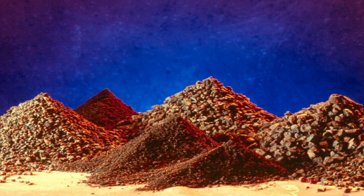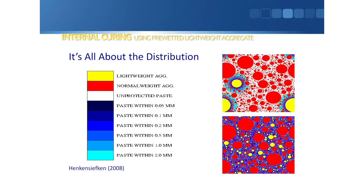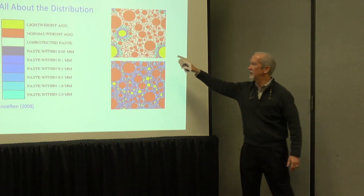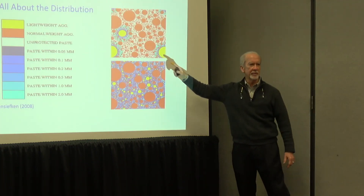The fine aggregate typically is used in internal curing, and this is a graphical depiction of that. If you used coarse aggregate, you'd have to use a lot more of it to get the particles close enough together to get the influence on the cement paste that you want. With fine aggregate, it's naturally distributed throughout the matrix.